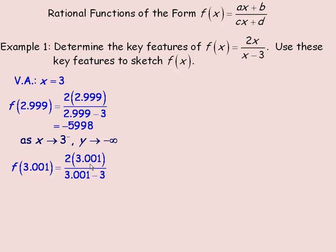Let's take a look on the other side as well. As x approaches 3 from the right side, 3.001 is to the right of 3, a little bit bigger than 3. The function value is a little over 6,000. So as x approaches 3 from the right side, y is tending towards a very large positive value — it tends towards infinity. If we put a number even closer to 3 on the right side, y would be even larger.